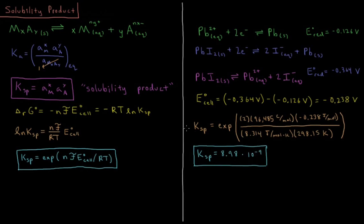So the result there would be that the solubility product for lead to iodide is 8.98 times 10 to the minus 9. So using some electrochemical cell for which the net reaction was the dissolving of this sparingly soluble salt into aqueous solution,